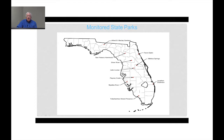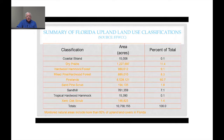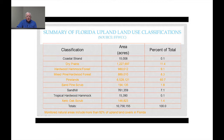This is a summary of upland land use classifications within the state of Florida. The categories highlighted are those included in the monitoring efforts, covering over 92% of all natural area land uses in Florida. Ones not covered — the coastal strand, sand hills, and tropical hardwood hammocks — are either low on the list for development pressure or contain very little land area within the state.